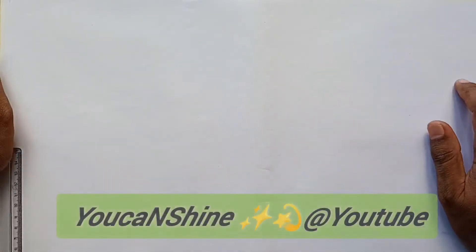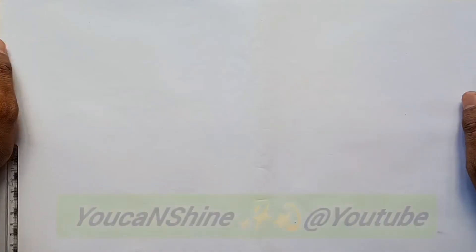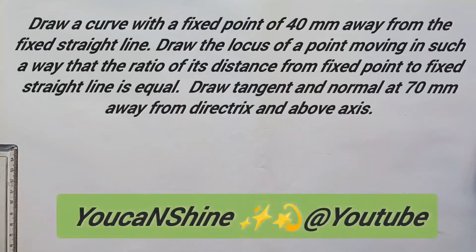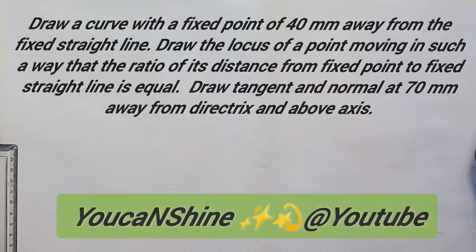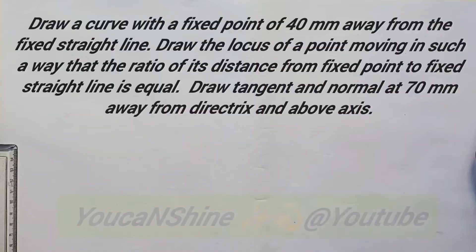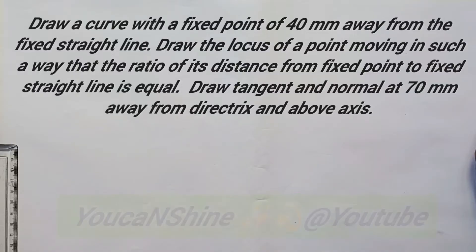Welcome. Here we are going to look at an interesting example of a parabola. Draw a curve where the fixed point is 40mm away from the fixed straight line. Draw the locus of a point moving such that the ratio of its distance from the fixed point to the fixed straight line is equal. Draw tangent and normal 70mm from the directrix and above the axis line.